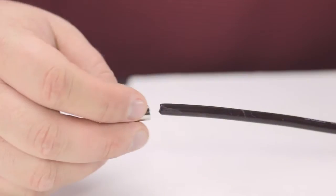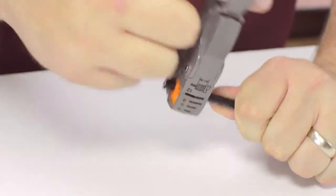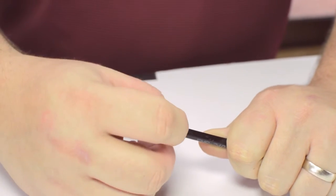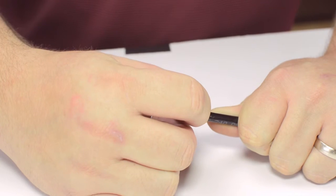Start by inserting the ferrule over the outer jacket of the cable. Then using your cable stripper, strip back the outer jacket and dielectric. The advantage of using a cable stripper is that it will strip back the jacket and dielectric at the same time.